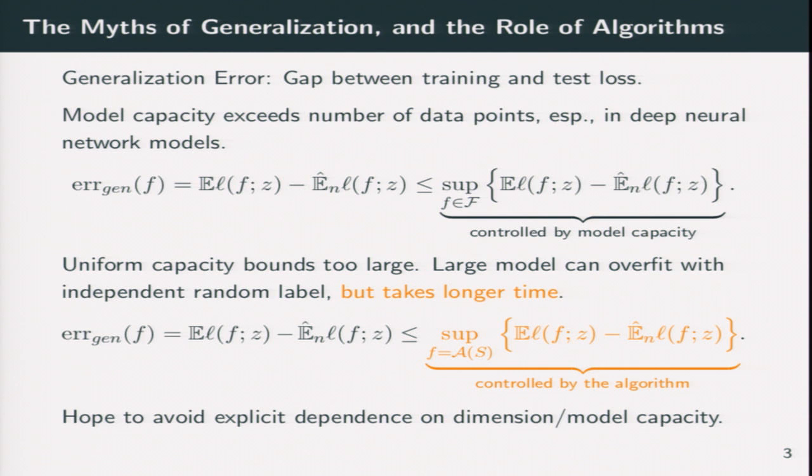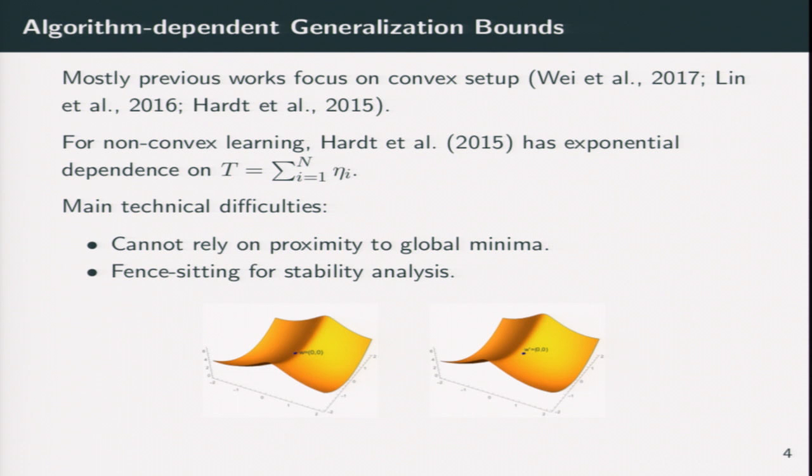So we turn to algorithm-dependent generalization bounds. There are a few works in this field, but most of them are focused on the convex setup. There is one work which gives a bound in the non-convex setup, which is Hardt et al., but their bounds have exponential dependence on time. And as we will show later, this is somehow undesirable.